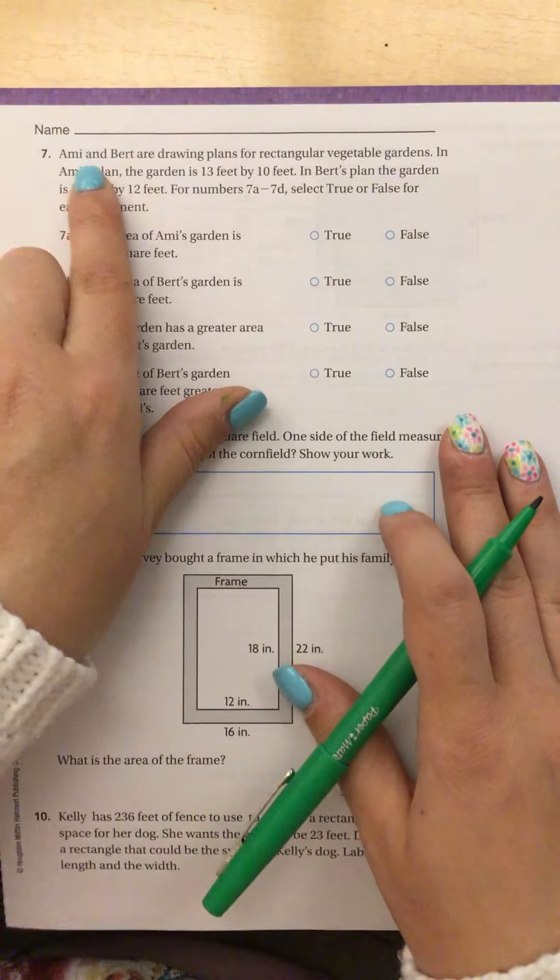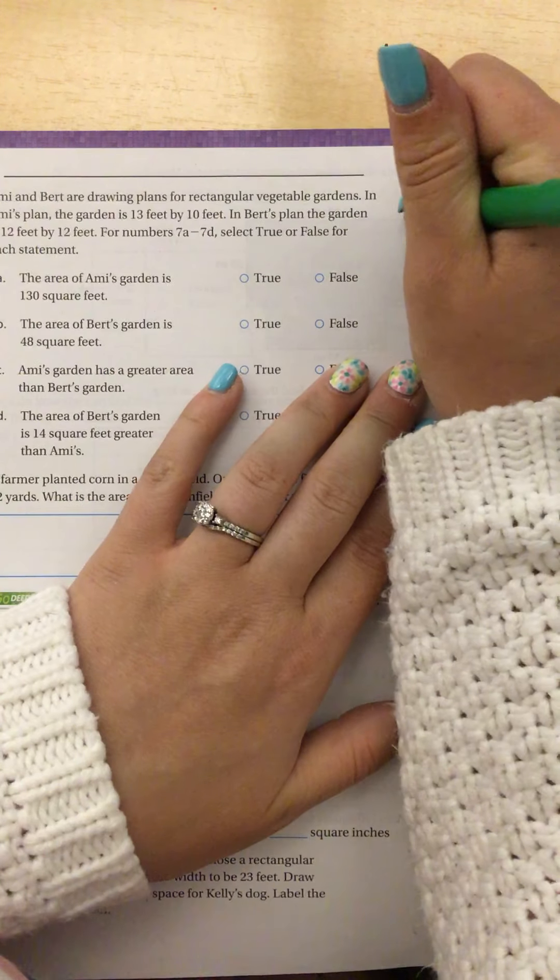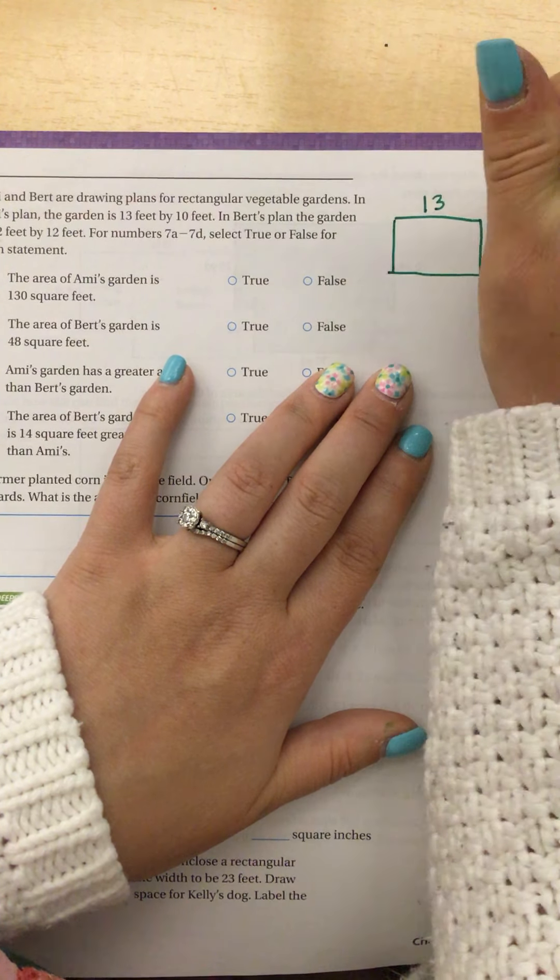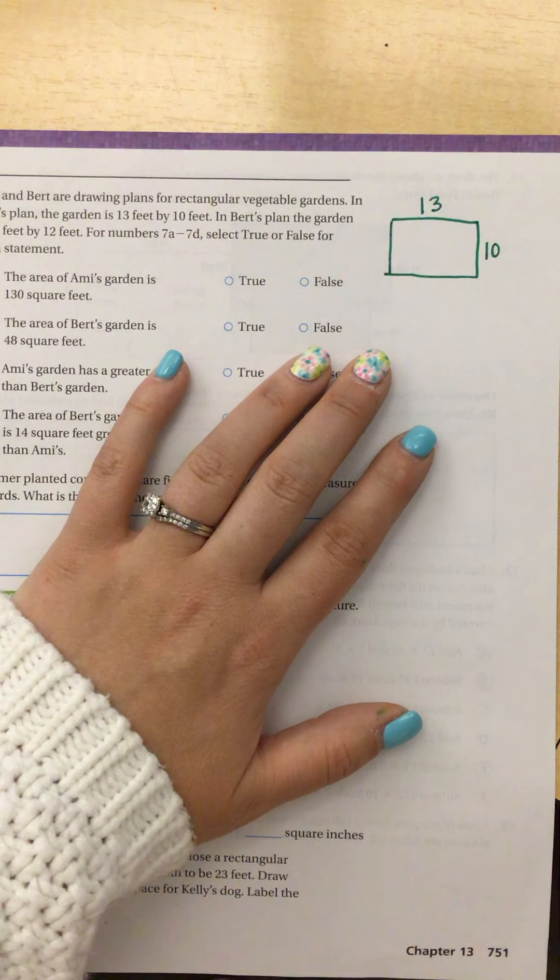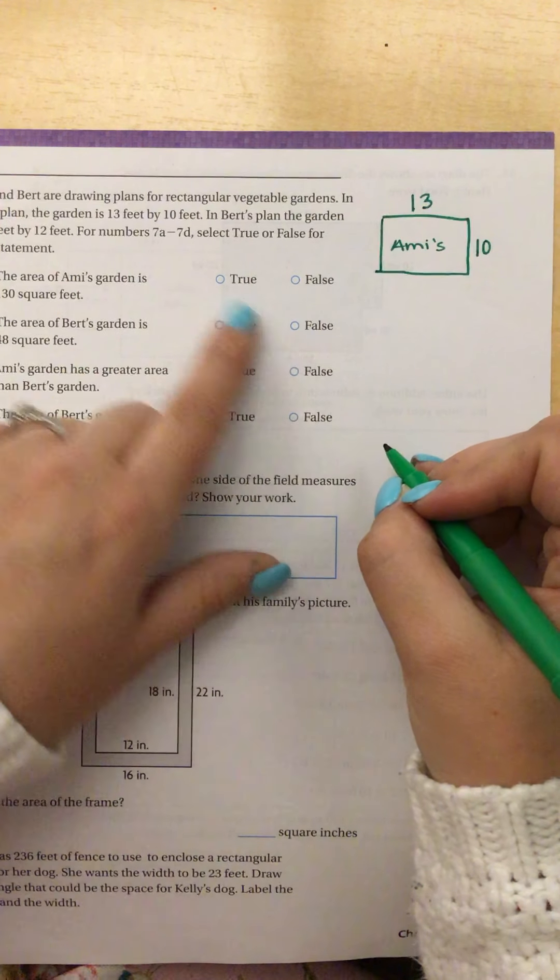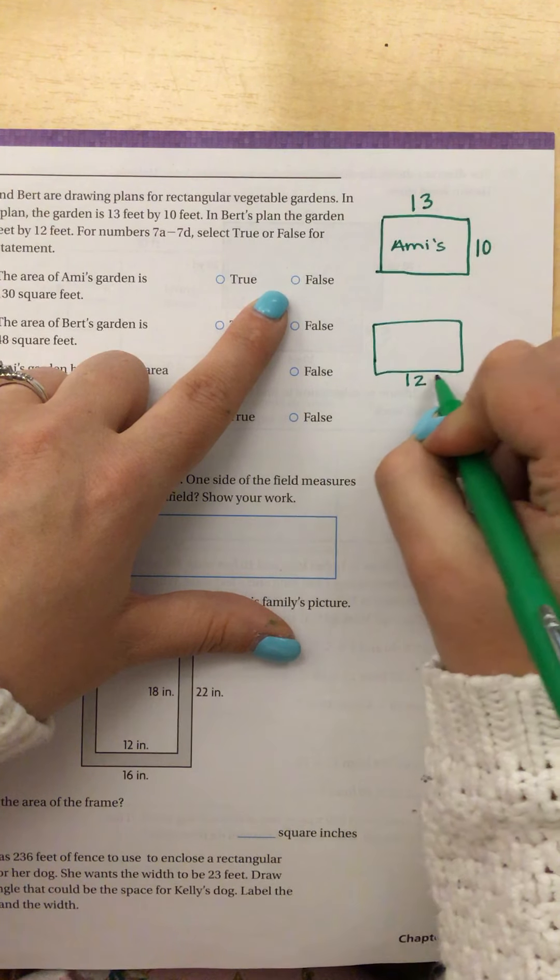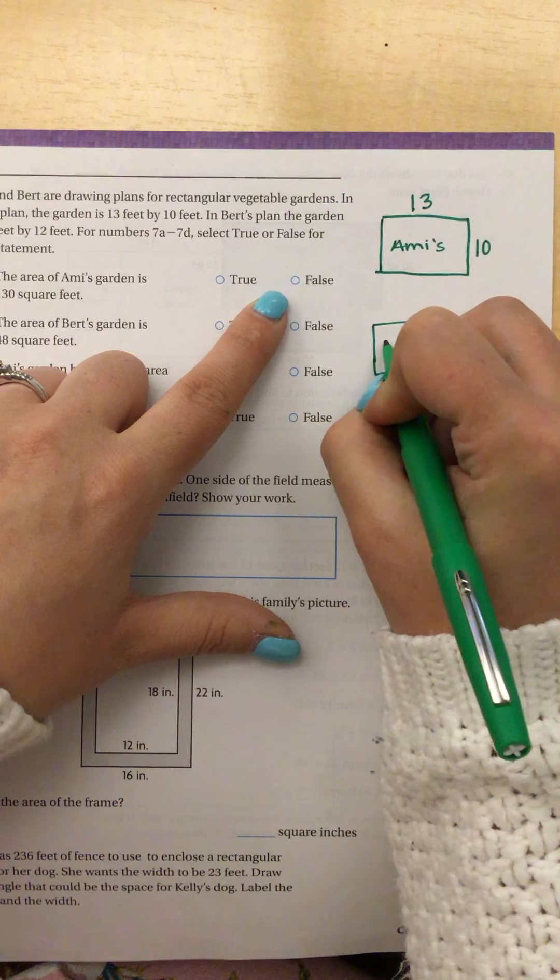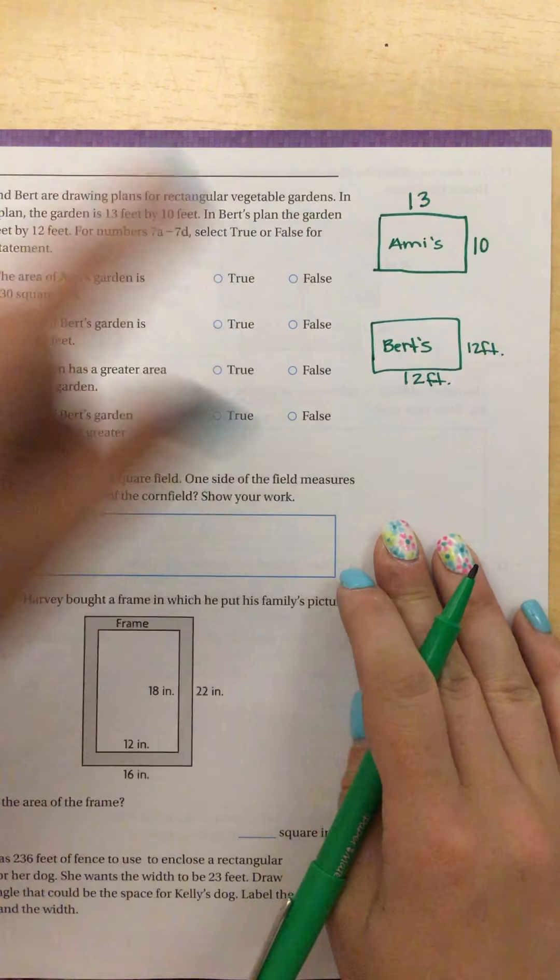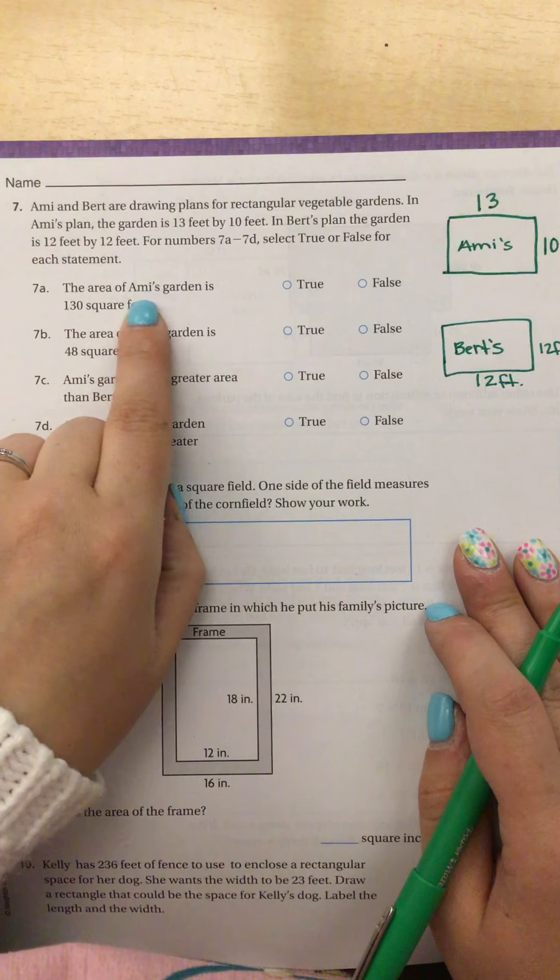Okay, next question. Amy and Bert are drawing plans for rectangular vegetable gardens. In Amy's plan, the garden is 13 by 10. So I'm going to go over here and I'm going to draw Amy's garden. So hers is 13 feet by 10 feet. And this is Amy. So I'm going to go ahead and make sure I label my drawing so I know whose is whose. In Bert's garden, the garden is 12 feet by 12 feet. And I should have drawn this more as a square since my sides are equal, but that's why we just label things.